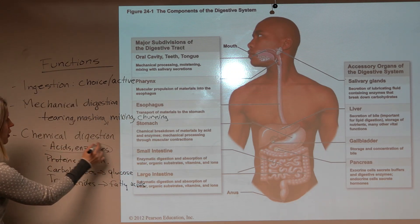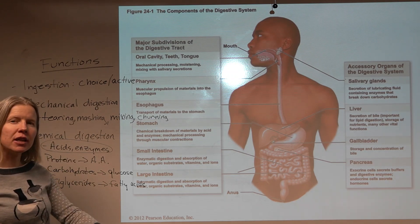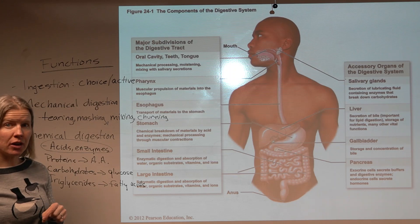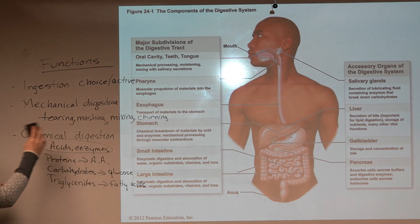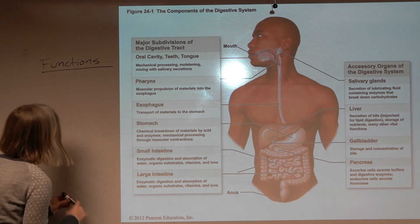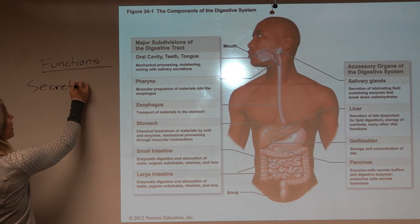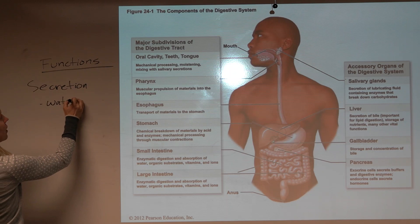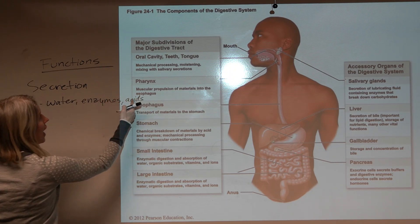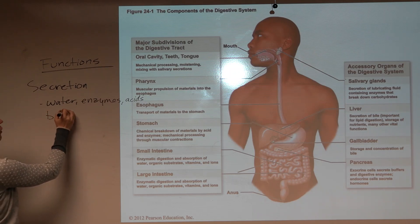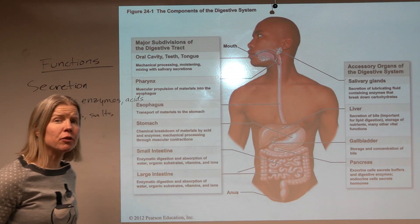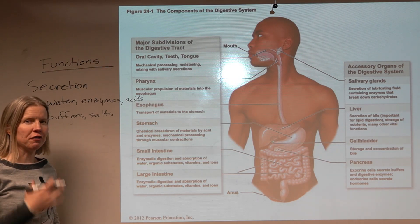To do chemical digestion, we actually need lots of different acids, enzymes, buffers, and water — all these things to be dumped into the digestive tract. And so that is another function: secretion. The digestive tract does a ton of this. Water gets added, enzymes, acids, and buffers to keep pH from getting too crazy. There are places where we're adding salts. We'll look for a lot of that to come from accessory organs, but sometimes it's coming from the organ that's part of the tract itself.